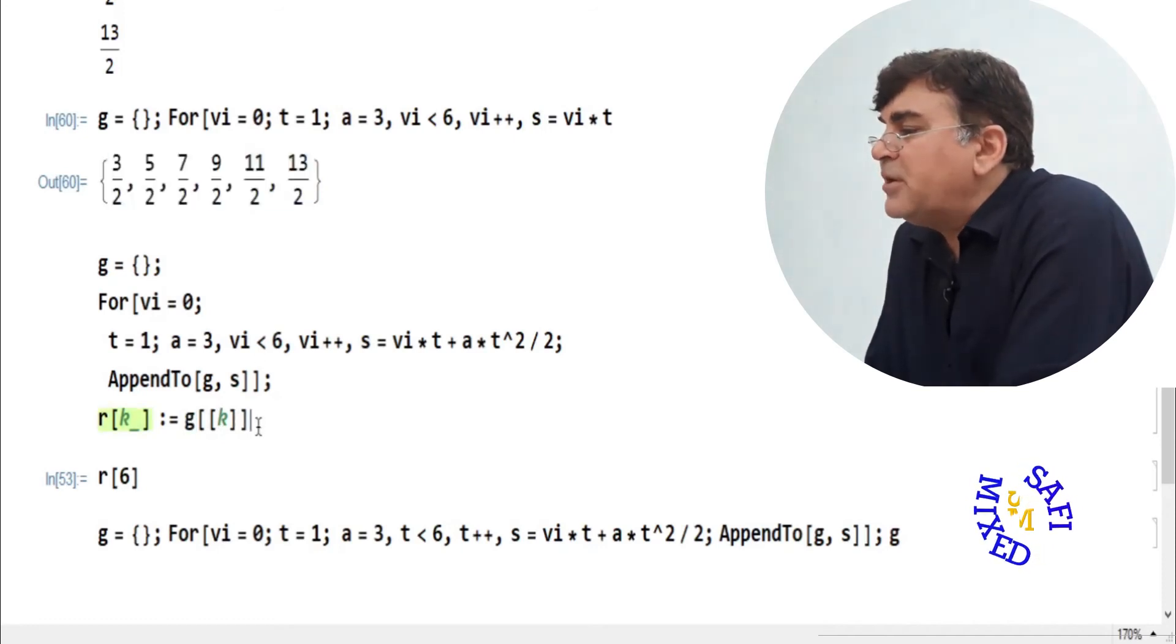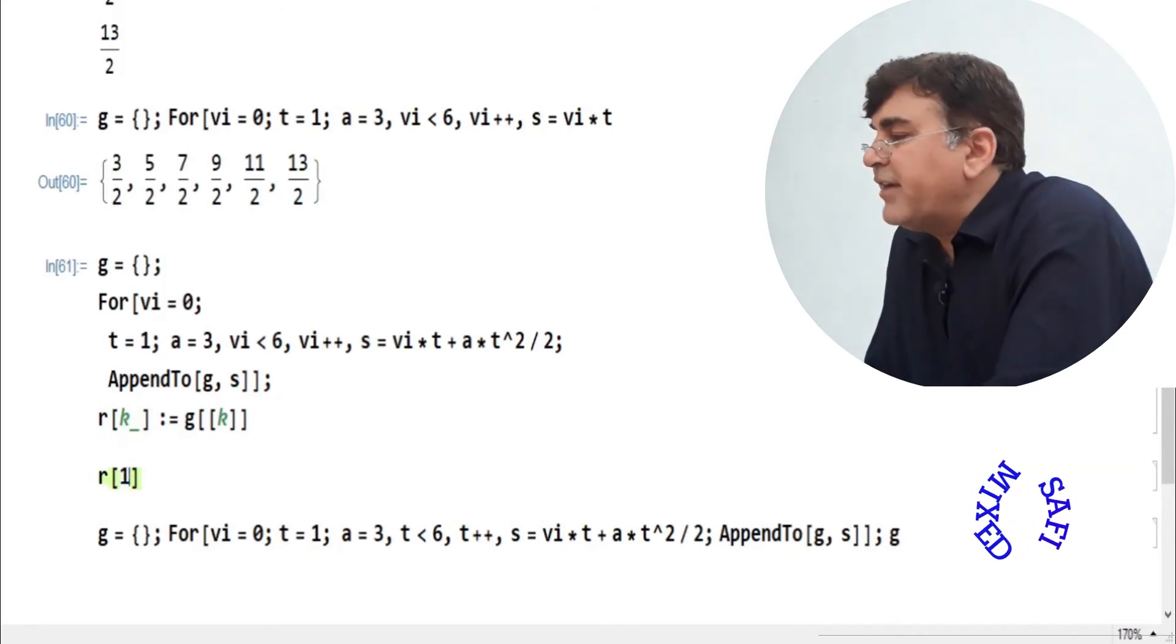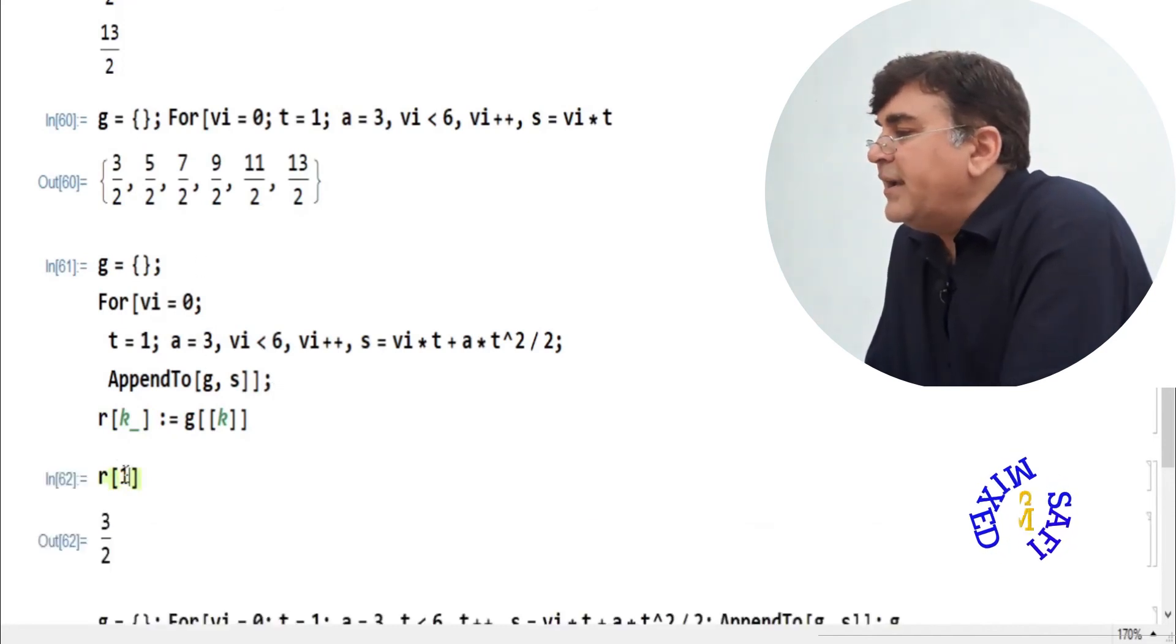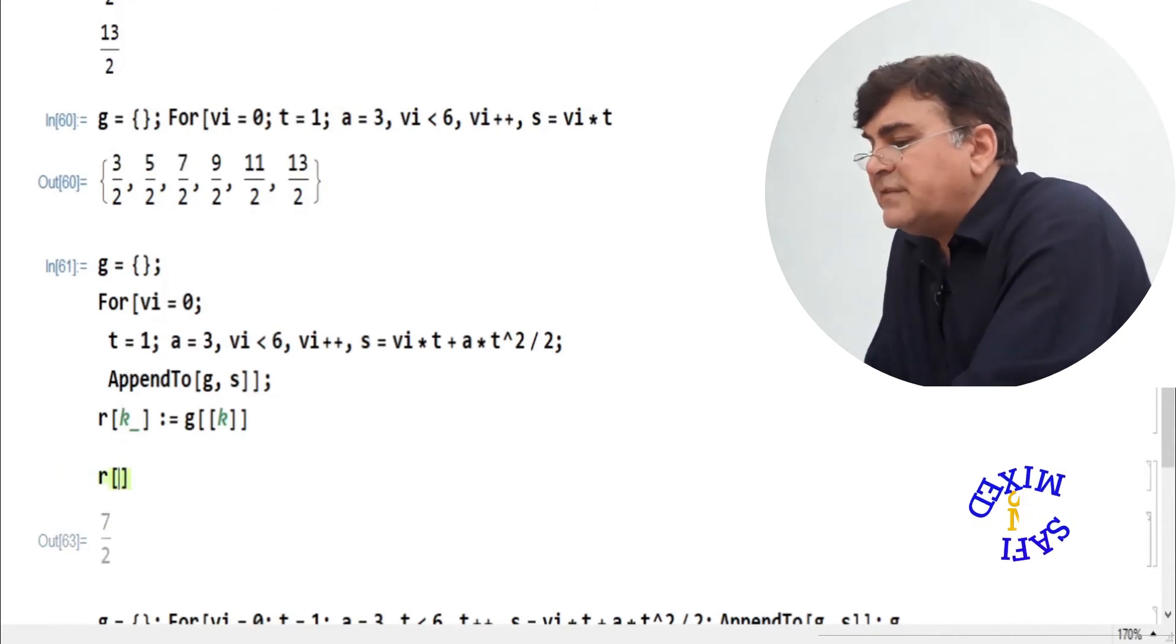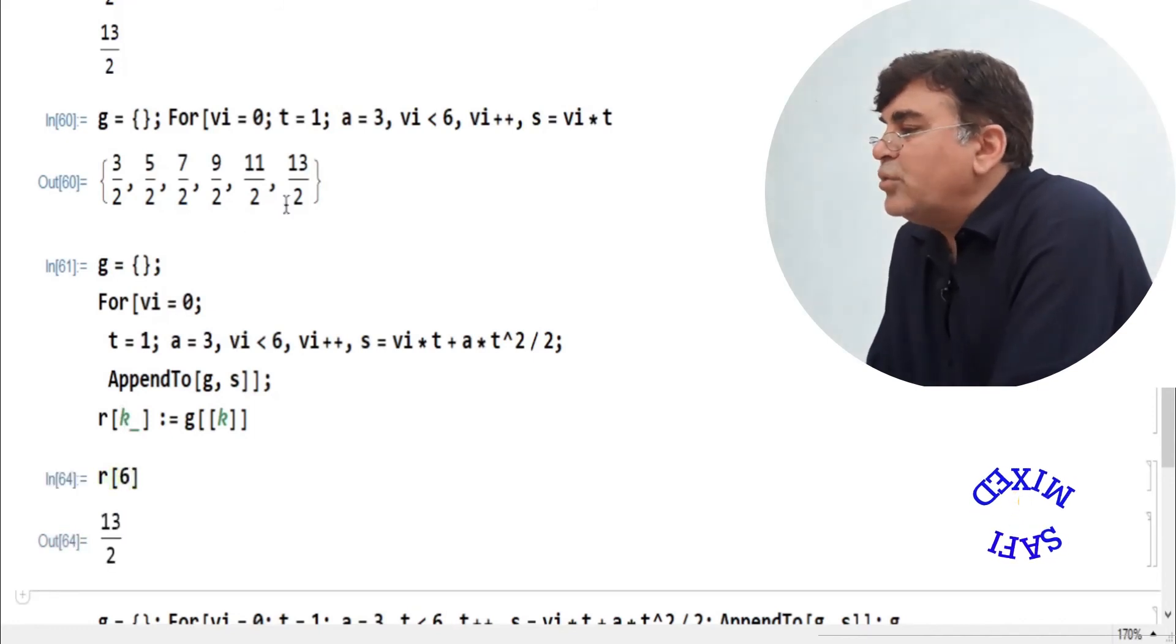So if I run this part of the equation and then I enter any choice inside it, for example, if I enter 1, I get 3 by 2, which is this thing. If I enter 3, I will get 7 by 2, which is the third element in this list. And if I enter 6, I will get 13 by 2 in the list G.